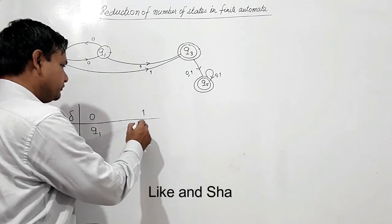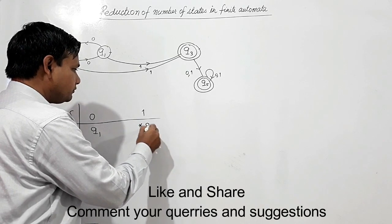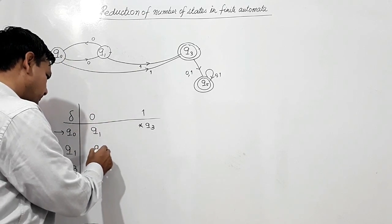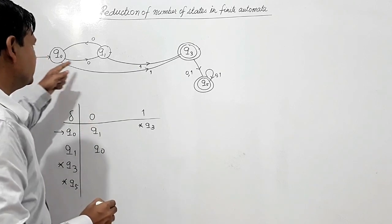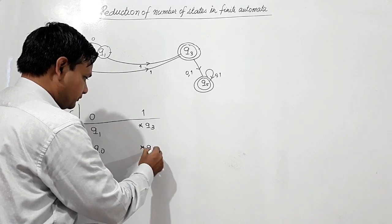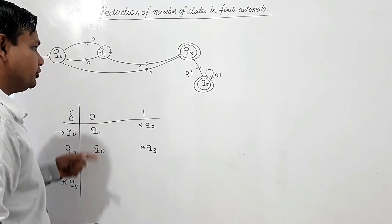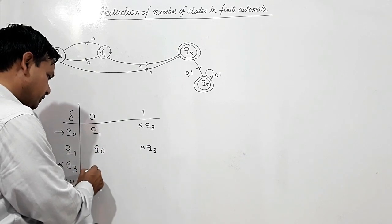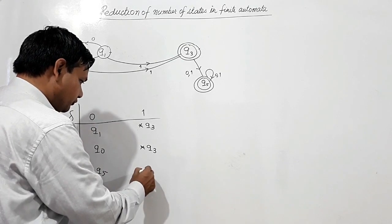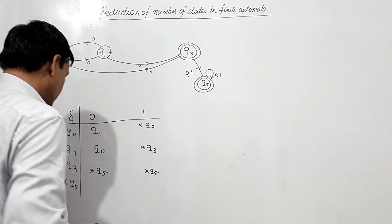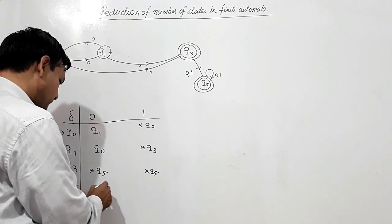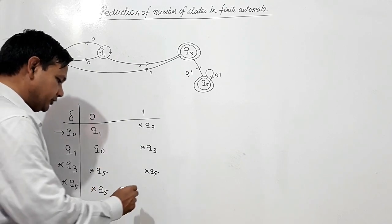Q0 on 0 goes to Q1, and on 1 goes to Q3 (a final state). Q1 on 0 goes to Q0, and on 1 goes to Q3. Q3 on 0 goes to Q5. Q5 on 0 goes to Q5, and on 1 also goes to Q5.